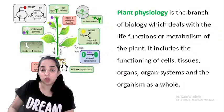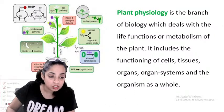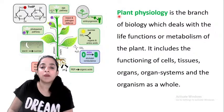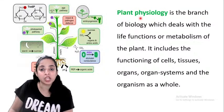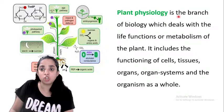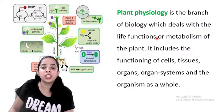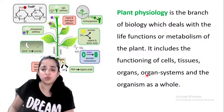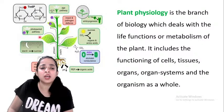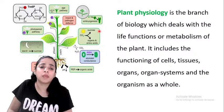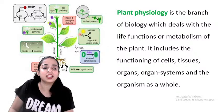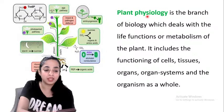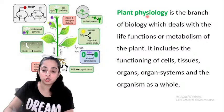This chapter, absorption by roots, is a part of plant physiology. All three chapters — photosynthesis, absorption by roots, and transpiration — belong to this. Plant physiology is a branch of biology which deals with life functions or metabolism of the plant. It includes the functioning of cells, tissues, organs, organ system, and organism as a whole. All these studies combined would be known as plant physiology.